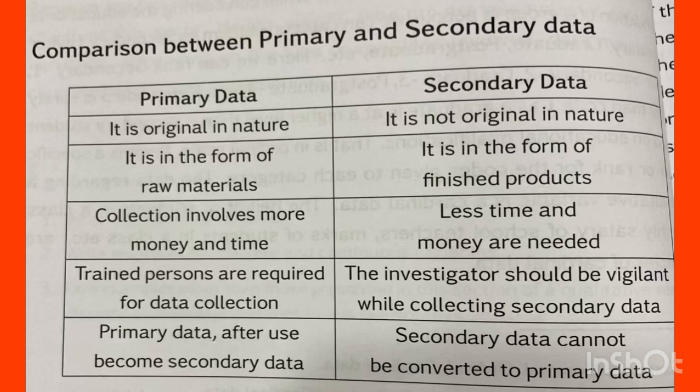Primary data is originally natural, while secondary data is not originally natural. Primary data is in the form of raw materials; secondary data is a finished product. Primary data involves more money and time, whereas secondary data requires less time and money.